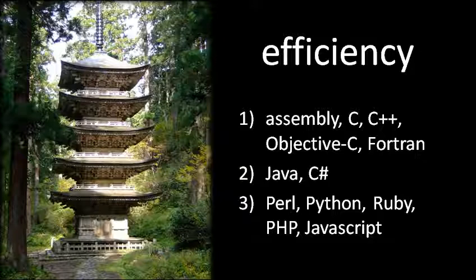As for efficiency in terms of memory usage, we have basically the same tiers, with Assembly and C code typically using the least memory — except in this case, Java and C# really aren't any better than Perl and Python and that class of languages. In fact, often Java and C# may be much worse in terms of memory usage, because the virtual machines for Java and C# are typically much larger than the interpreters for Python and Ruby. So if you write a program that doesn't use a lot of data in Java versus Python, the Java program is going to take more memory because the VM itself takes up a lot more space.